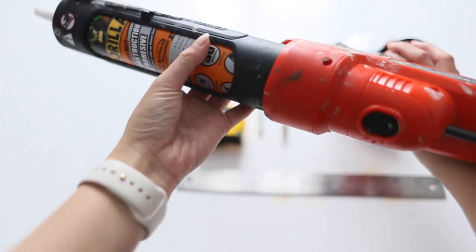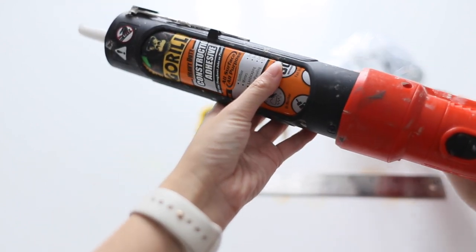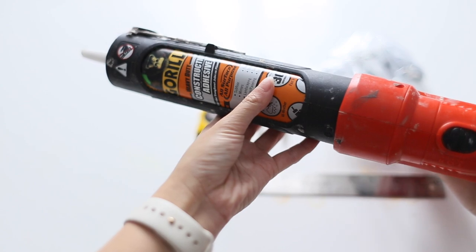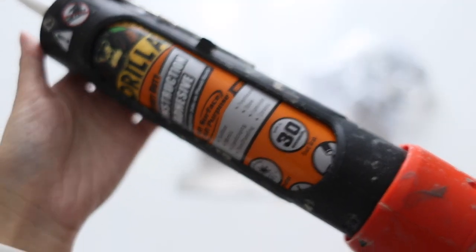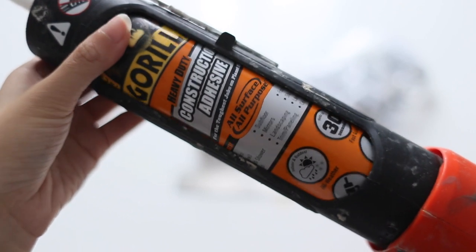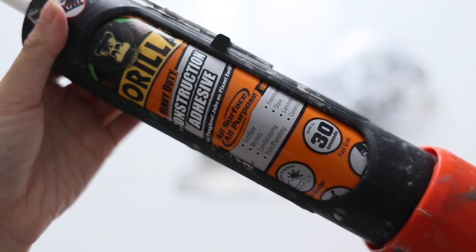For the adhesive, I am using Gorilla Glue. Make sure when you're picking out a glue for this project, it needs to say that it is mirror safe. If you use just any glue, it can destroy the backing of the mirror, and we definitely do not want that.